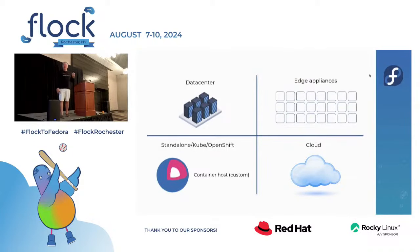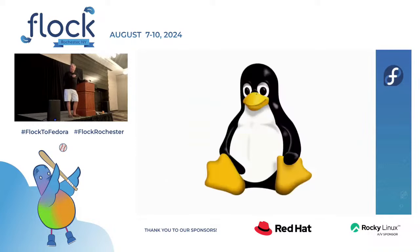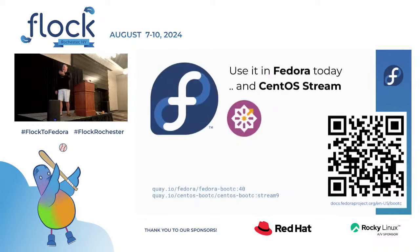Many think of this as edge deployment technology, but it's equally applicable to managing large numbers of identical data center systems. OpenShift already has a predecessor and plans to move to bootc container images, along with much of the cloud infrastructure. In the Fedora community, work is underway across different products. Fedora bootc and CentOS bootc images are available now, and there is a RHEL bootc 9.4 image available.